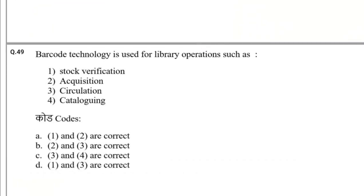Question number 48: Barcode technology is used for library operations such as — options: Stock verification, Acquisition, Circulation, Cataloging. The answer is Option D: 1 and 3 correct. Barcode technology is used for library operations such as Stock verification and Circulation.